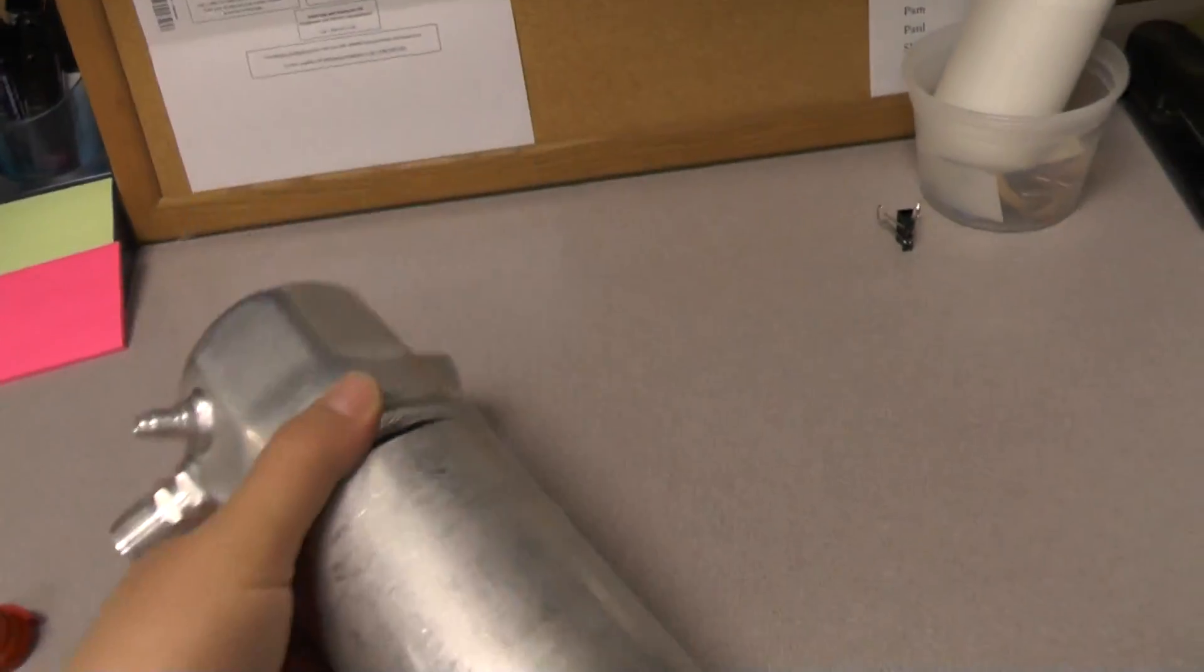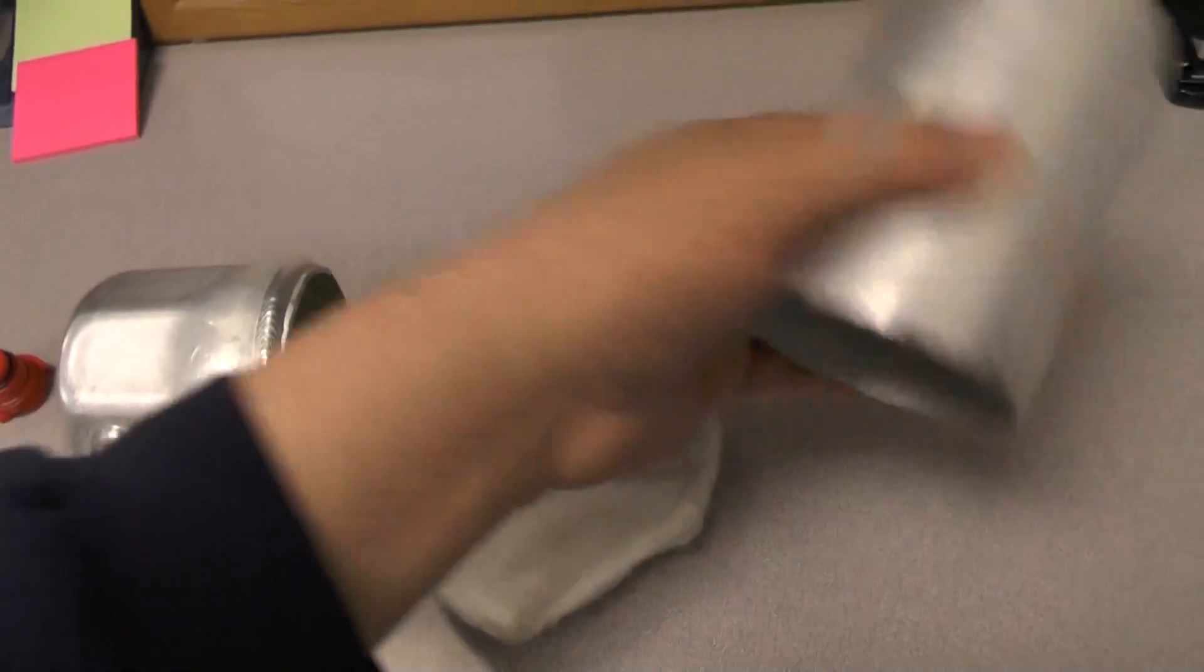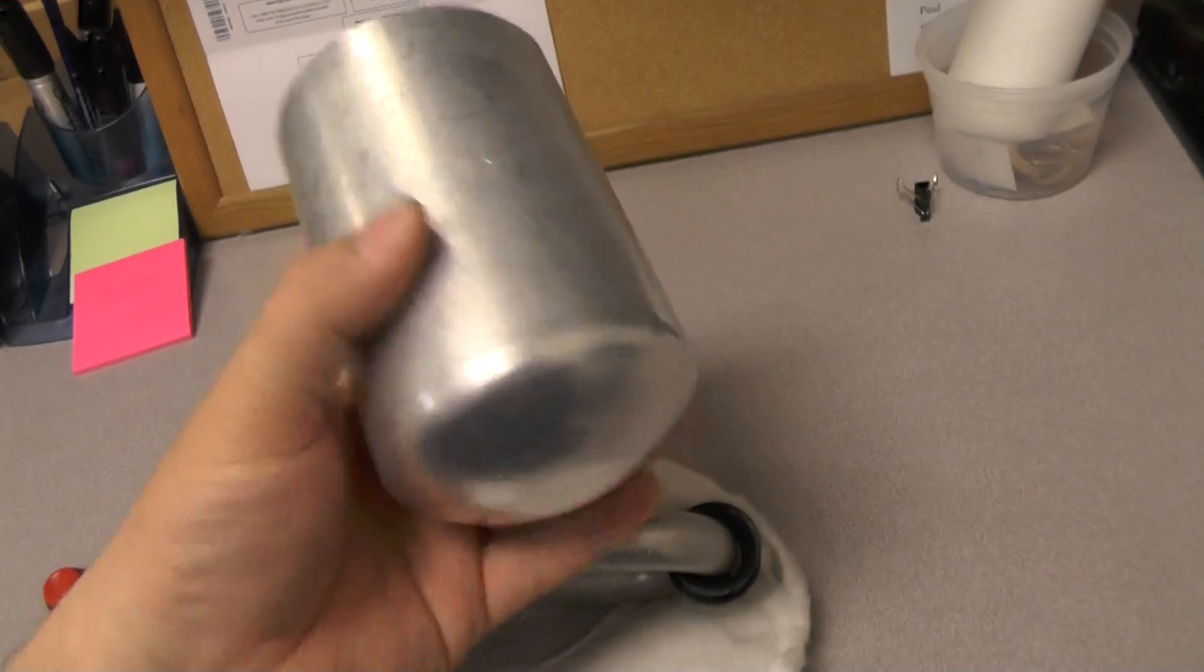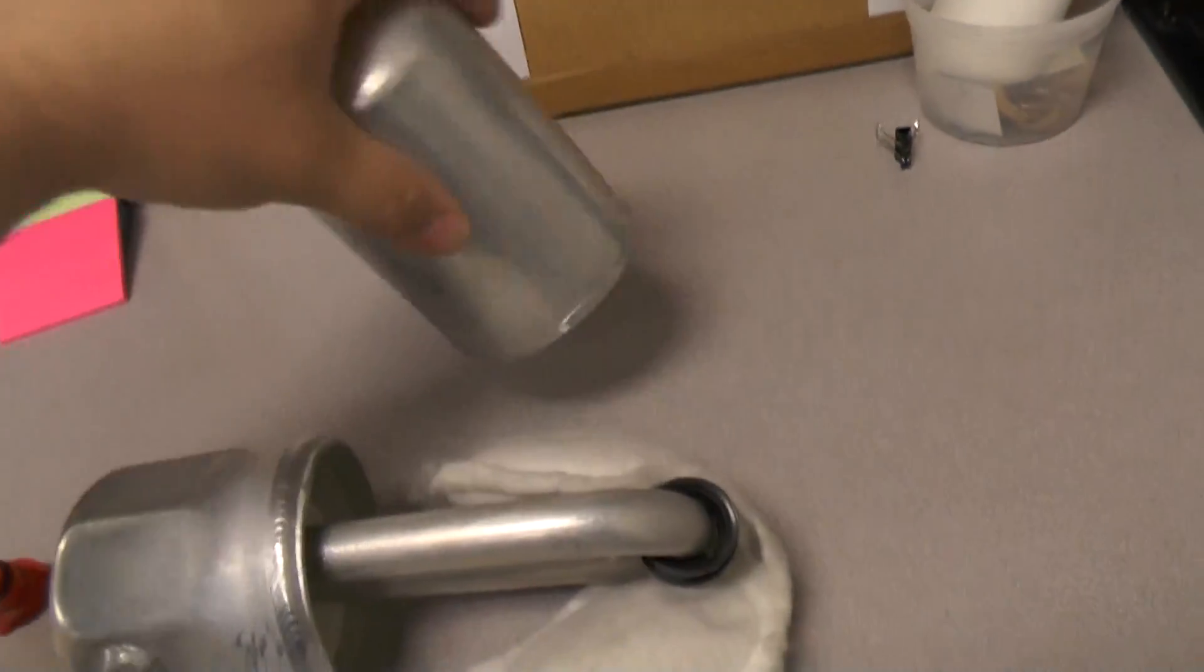So anyway, like I said, this is a cutaway that we use. So you pop it open. And you can see the bottom of it here is really just an aluminum can.